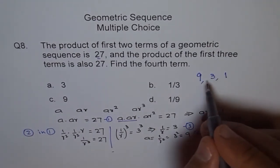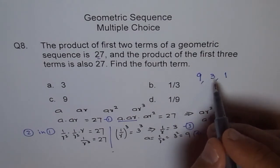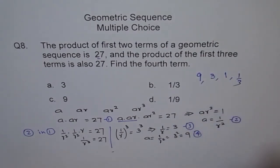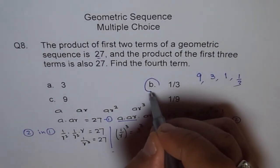So what is the fourth term? I am multiplying by 1 over 3. So the fourth term is 1 over 3. That's your answer.